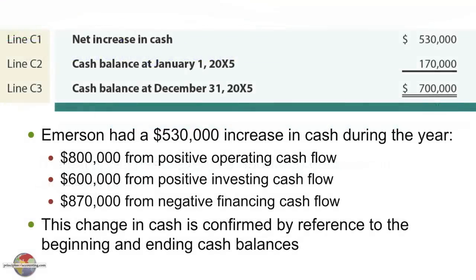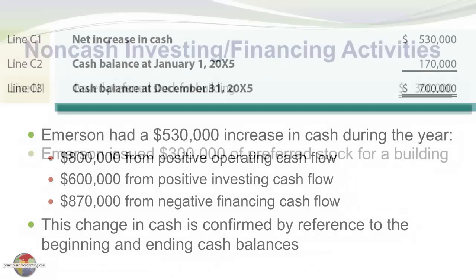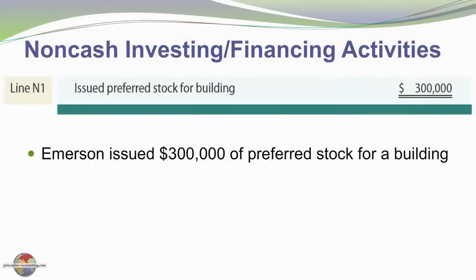Finally, we have the change in cash — increases of $530,000 compared to beginning and ending balances. For the non-cash investing activities section, anytime you have non-cash investing and financing activities, you show them as an add-on, either in supplemental notes or attached to the bottom of the statement of cash flows.